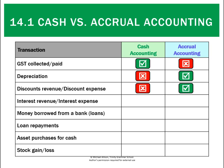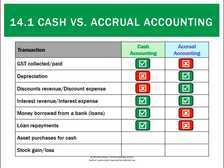Discount revenue and expense are the same in both methods. Interest revenue, assuming it's been received and paid, would go in both. Money borrowed from a bank is money we've received but it's not revenue. Loan repayment is money we've paid but it's not an expense. If we buy non-current assets and pay cash, that's an item under cash accounting but under accrual accounting it's not an expense. Stock gains and losses don't affect our cash balance so they wouldn't be recorded under cash accounting, but under accrual accounting we need them to calculate profit because they represent a revenue or an expense.